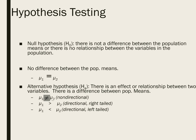Usually a researcher will have an idea that is likely a directional research hypothesis, but they might resort to using a non-directional statistical test to give themselves the opportunity of being wrong in the completely opposite direction — and we'll get to that in a moment.